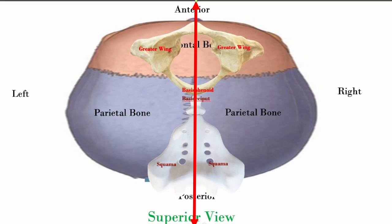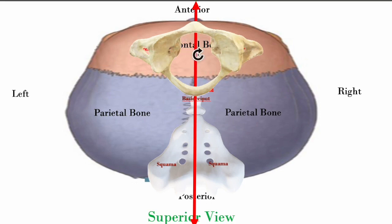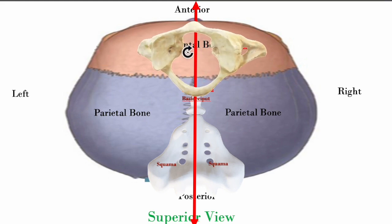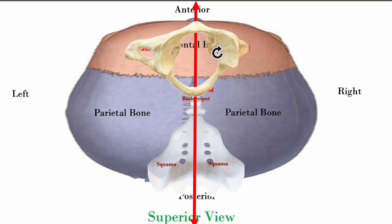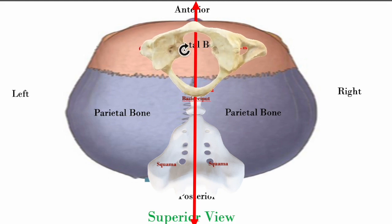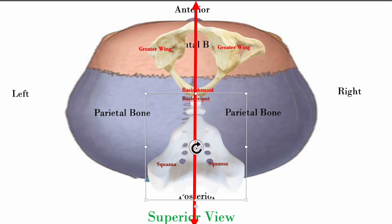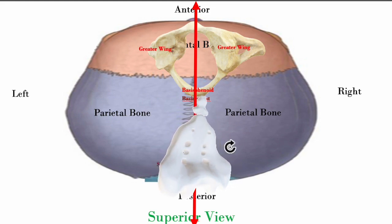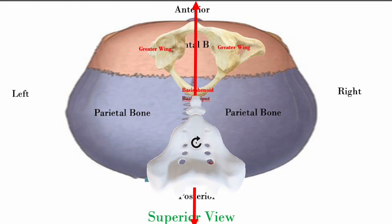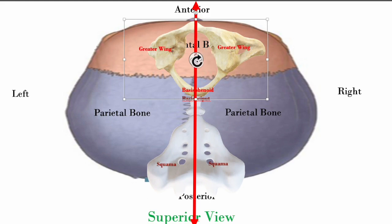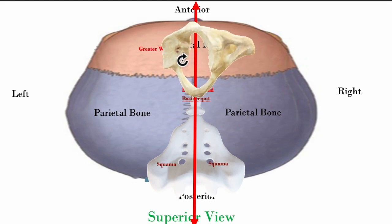Now let's talk about axes and planes for torsions. The axis is an anterior-posterior axis. The sphenoid moves around this anterior-posterior axis, and you can see it's a side-bending or lateral flexion movement. The same applies to the occiput — around the anterior-posterior axis, you have a side-bending movement.